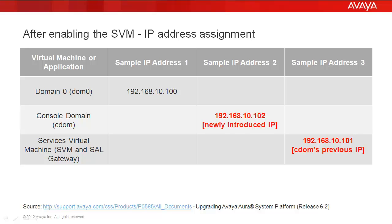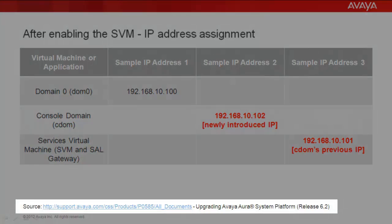Configuring your IP addresses in this fashion should allow your SVM to communicate with Avaya seamlessly after it has been enabled. Complete details and step-by-step instructions on how to change the CDOM IP address can be found on Avaya support document titled Upgrading Avaya Aura System Platform Release 6.2.